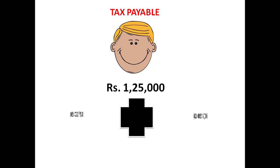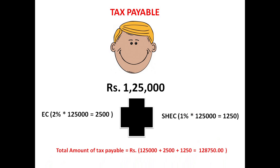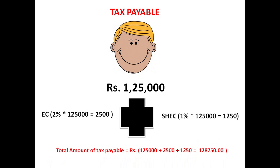Adding these together, the total tax payable by Mr. Nair is ₹1,25,000, plus 2% Education Cess on ₹1,25,000 which is ₹2,500, and 1% Secondary and Higher Education Cess on ₹1,25,000 which is ₹1,250. So the total tax payable equals rupees 1 lakh 28 thousand 750.